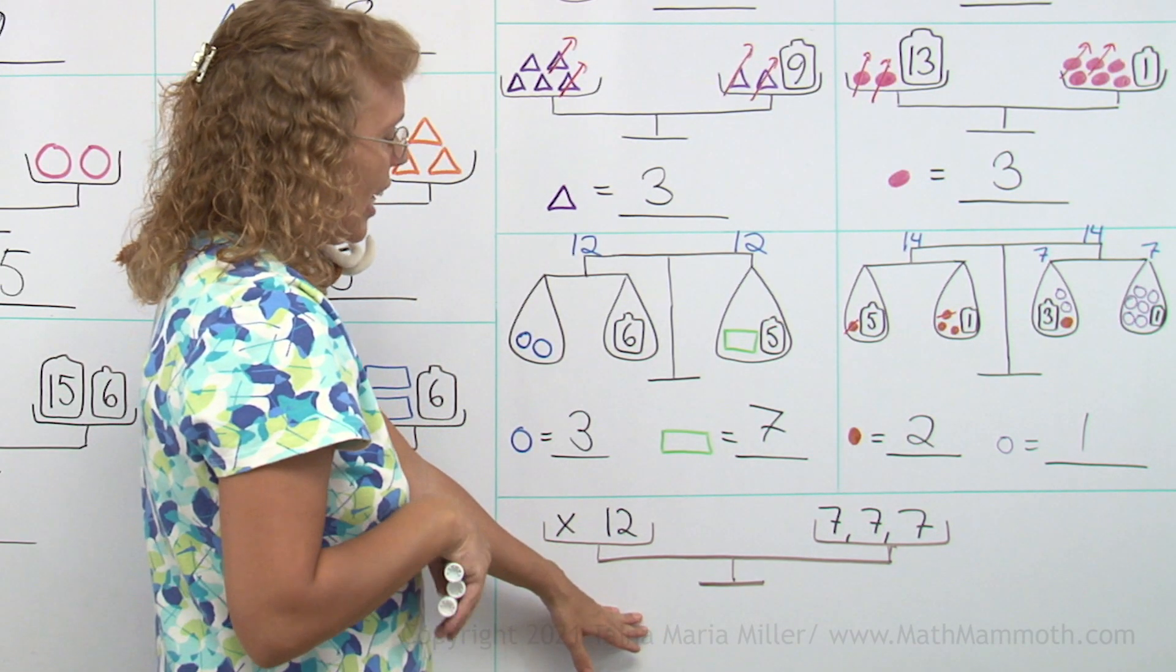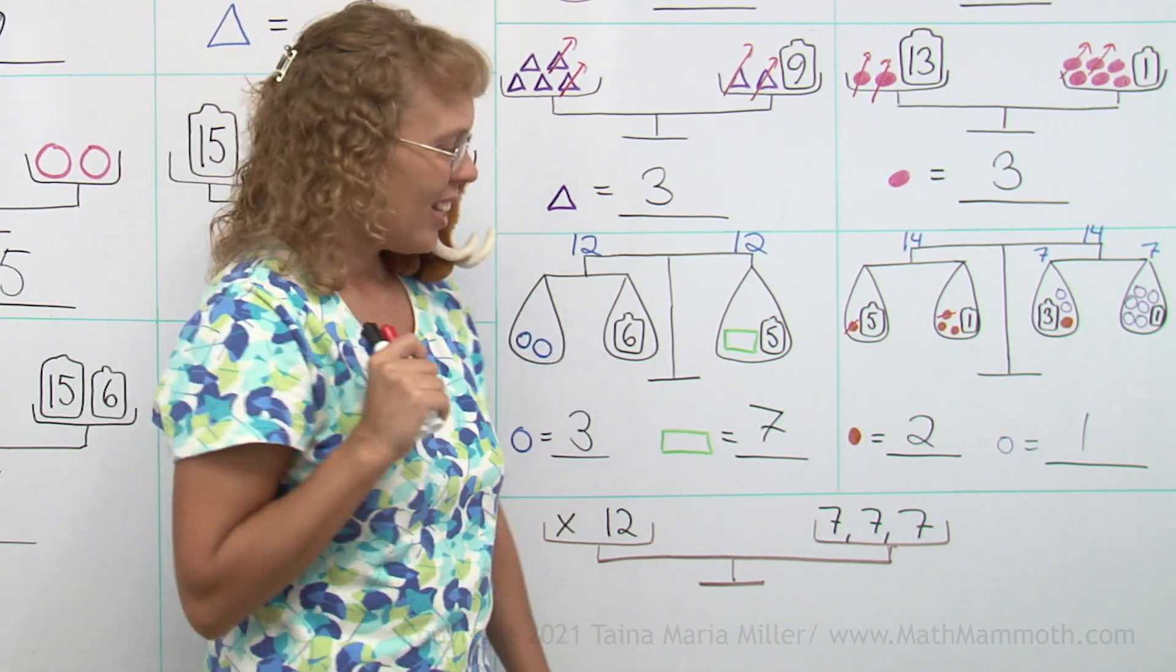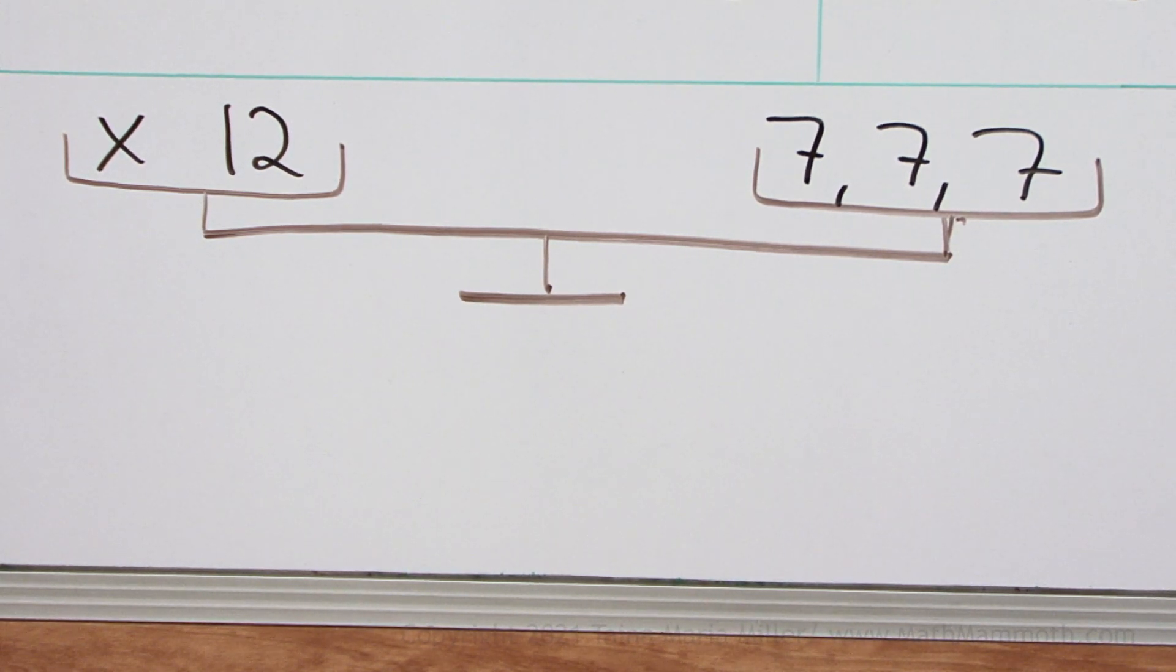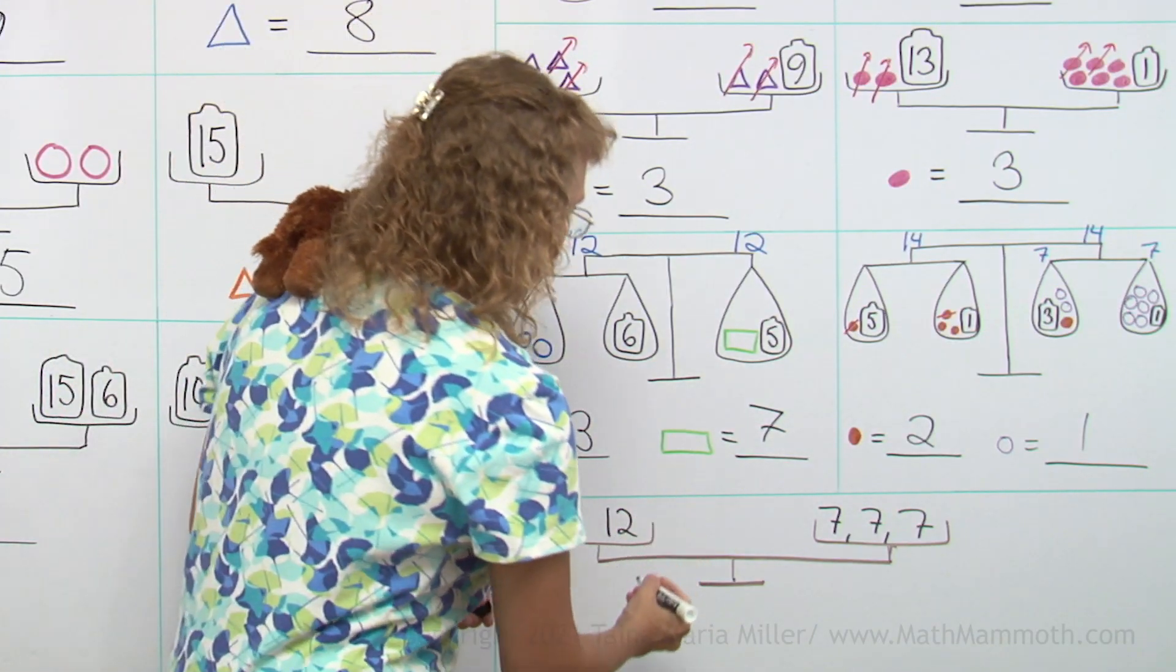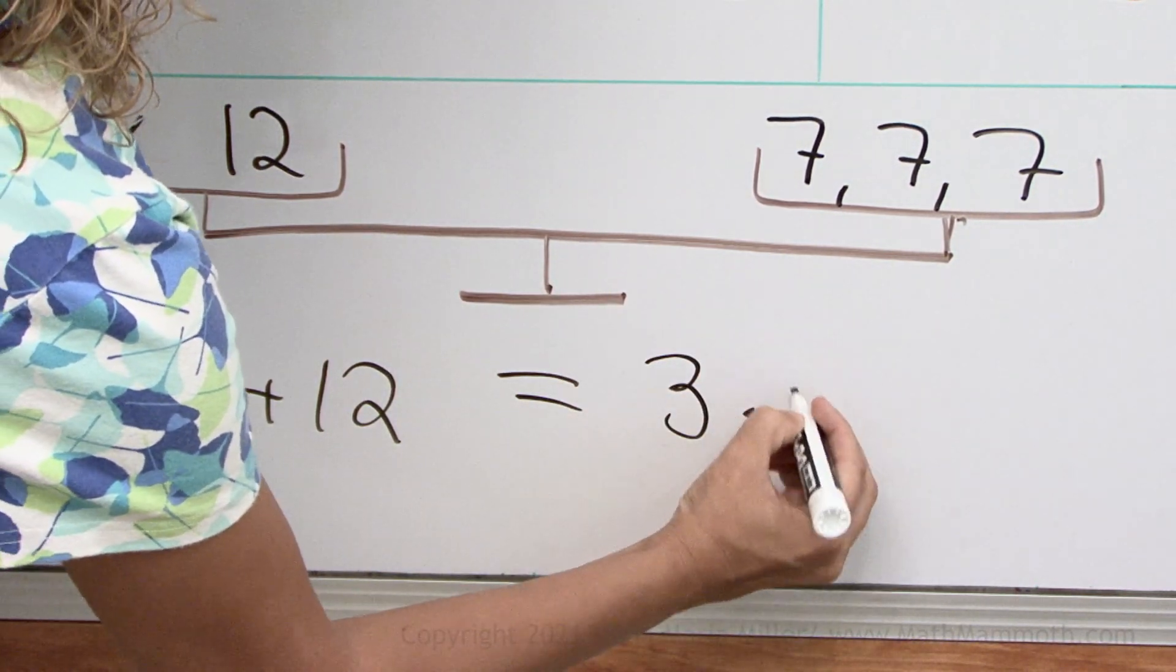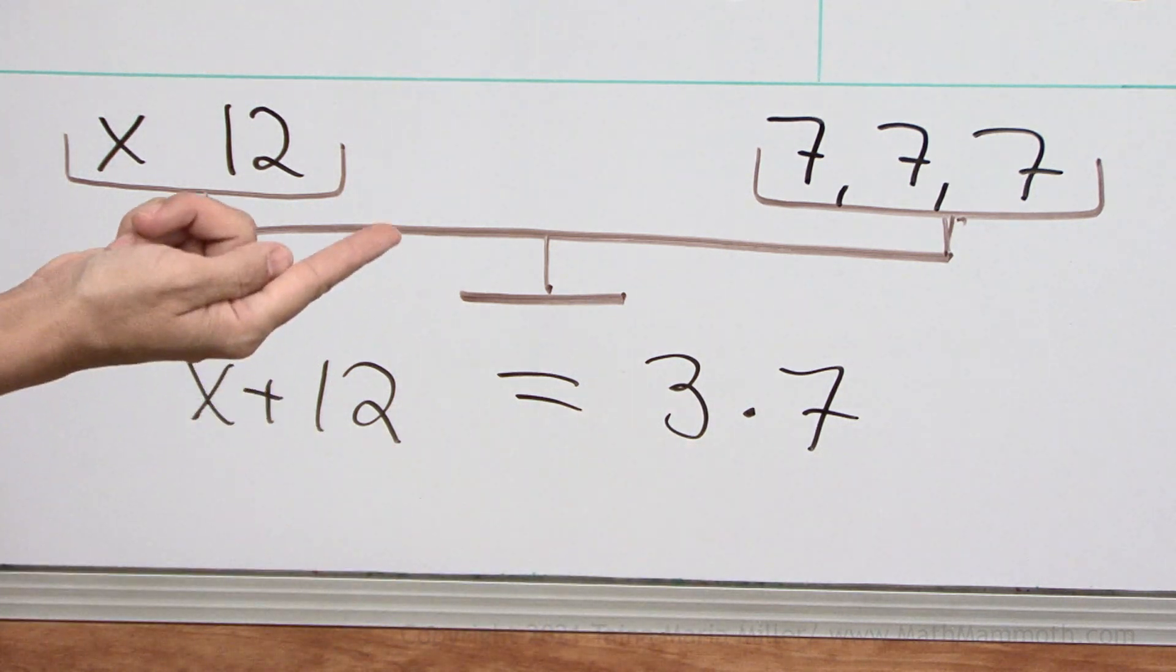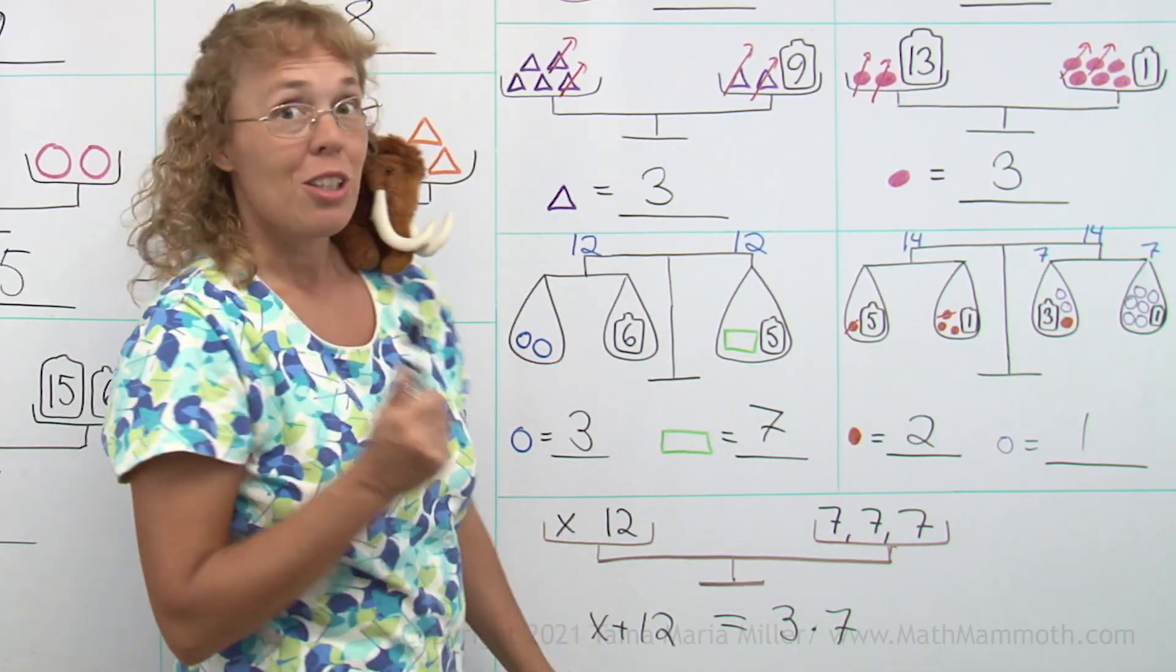I have one more and it has numbers. You know, I was mentioning about equations. And this is basically an equation. Can you solve it? It has an unknown x, not a shape this time, but an x. But this is the same as the algebra problem of x plus 12 on this side equals three times seven. Now this raised dot is a multiplication sign that we use in algebra because if we used x, you would think it is the same x as here. So we can't use x for multiplication. But looking at the balance, surely you can solve it.